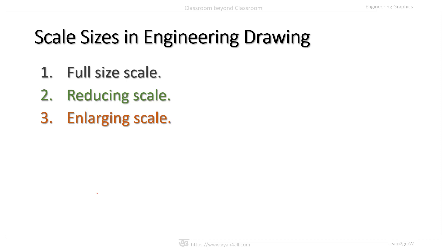Based on the object size, scales are of three types: full size scale, reducing scale, and enlarging scale. Full size scale is a 1:1 scale, meaning the drawing is made to actual size. Reducing scale — such as 1:2 or 1:3 — is where the actual measurements of the object are reduced to some proportion; for example, drawings of a bridge, building, or large machine. Enlarging scale — such as 2:1 or 3:1 — is used for small objects like watch parts, where actual measurements are increased.